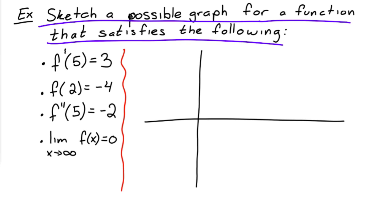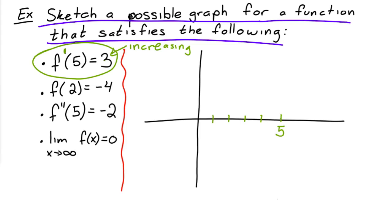Now we have an example where we're given information about a function and we need to figure out a possible graph. There are several different correct answers. The first condition says f'(5) = 3, which means that when x equals five, the derivative equals three — so the function has to be increasing at exactly x = 5.